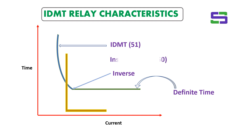Now, coming in just like an L shape, this is the instantaneous or the 50 element — the instantaneous element of the IDMT relay. It is called instantaneous because in the case of a very high short circuit fault condition, the relay should not wait for any time delay to issue a trip command.